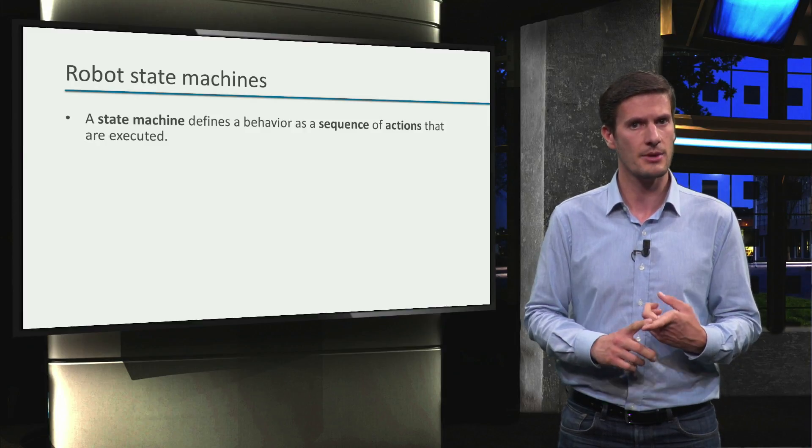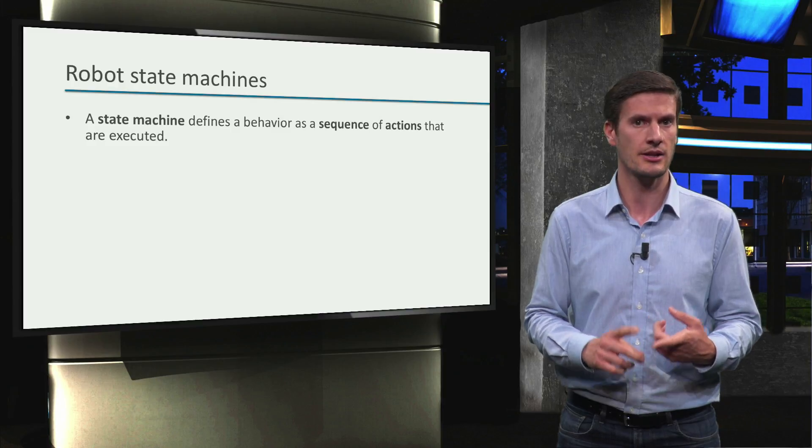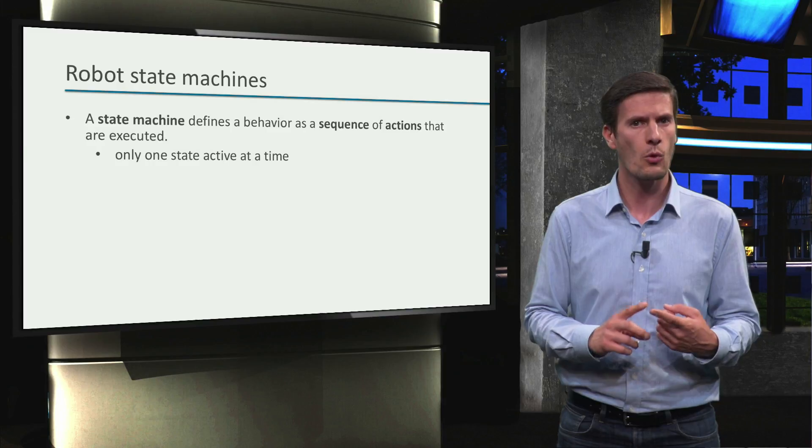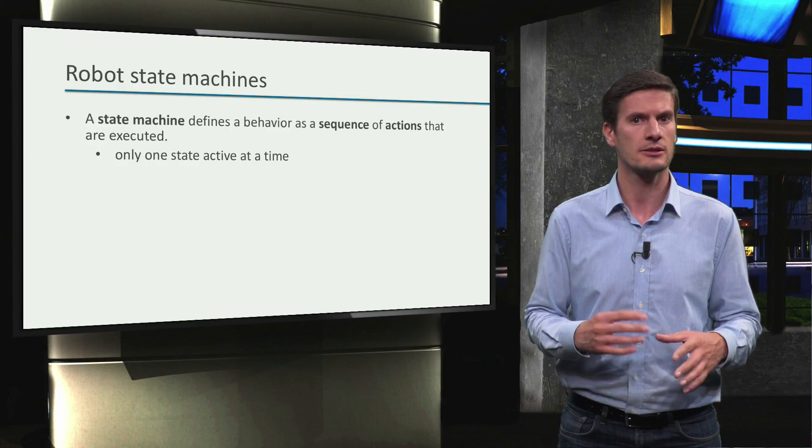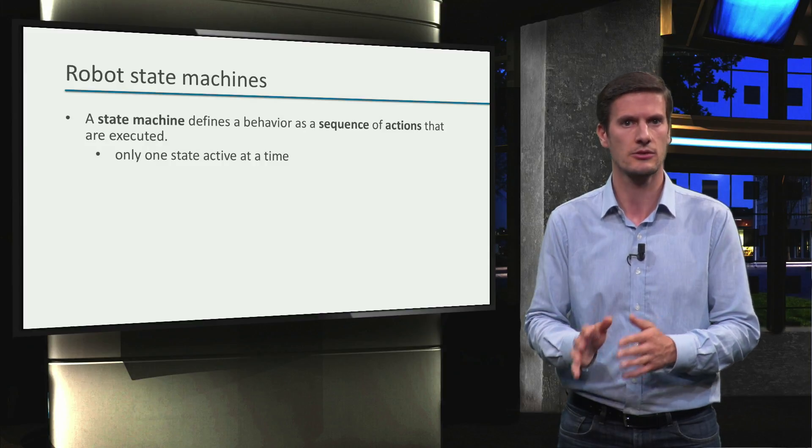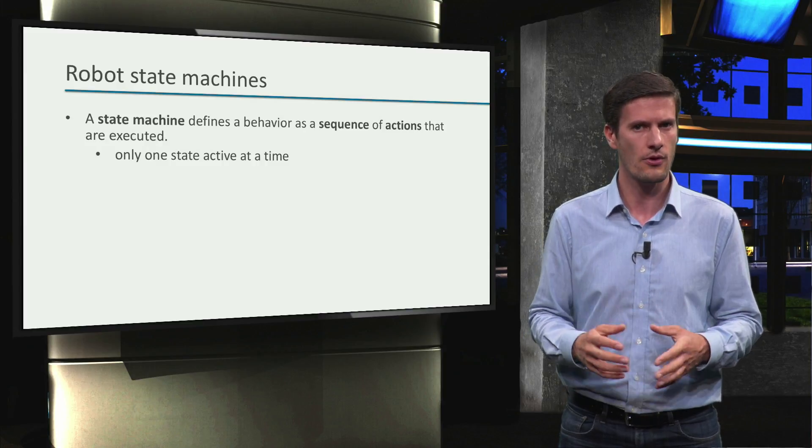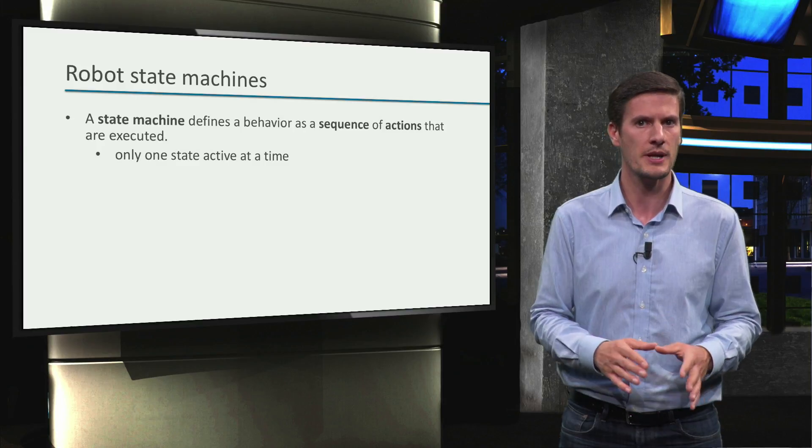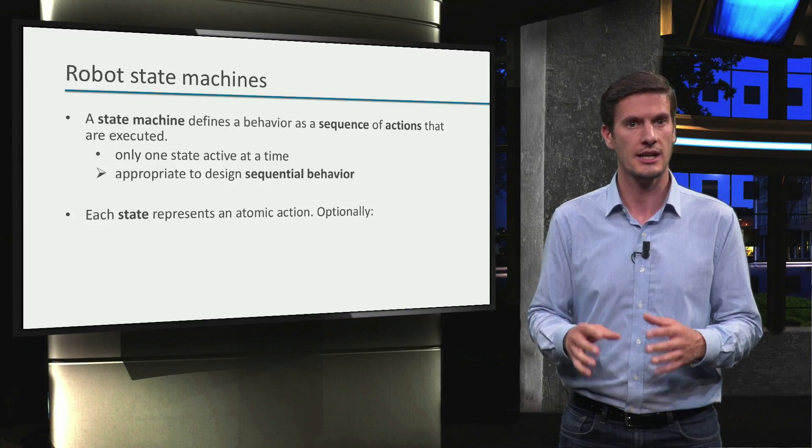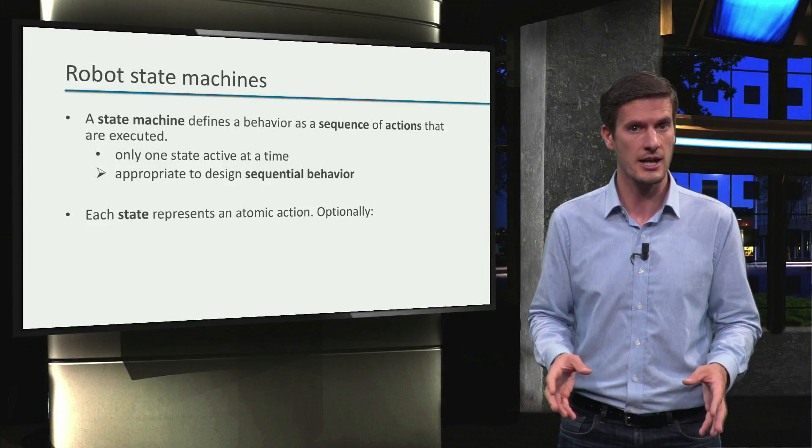State machine defines a behavior as a sequence of actions that are executed. During behavior execution, only one state becomes active at a time, and it has to finish execution before the state machine transitions to the next state. Therefore, basic state machines are appropriate to specify simple sequential behaviors.